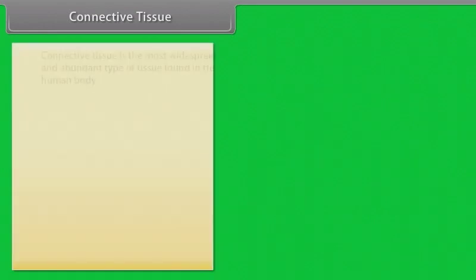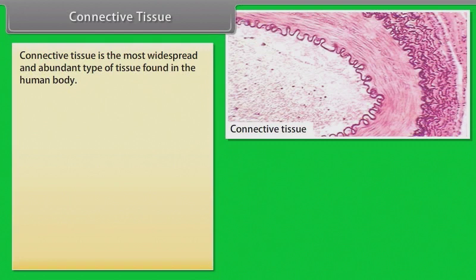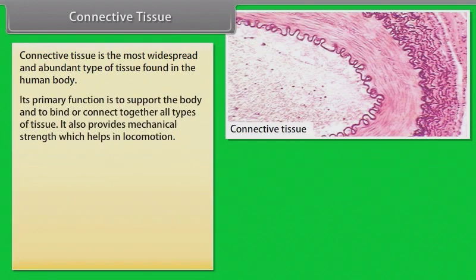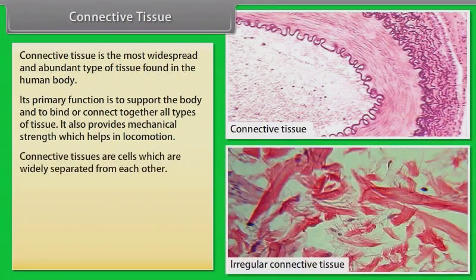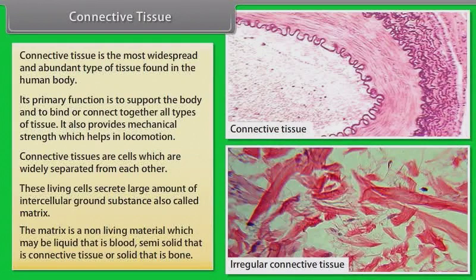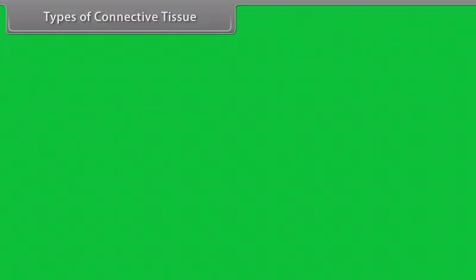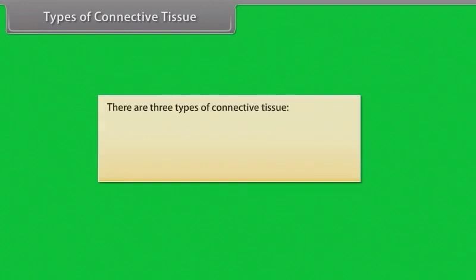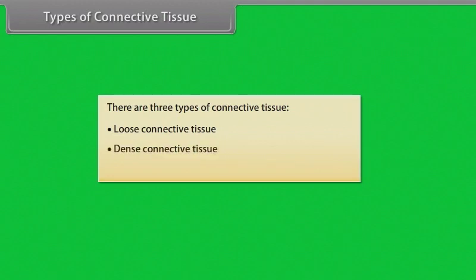Connective tissue is the most widespread and abundant type of tissue found in the human body. Its primary function is to support the body and to bind or connect together all types of tissues. It also provides mechanical strength which helps in locomotion. Connective tissue cells are widely separated from each other, and these living cells secrete large amounts of intercellular ground substance, also called matrix. The matrix may be liquid (as in blood), semi-solid (as in connective tissue), or solid (as in bone).